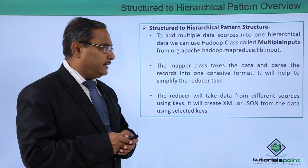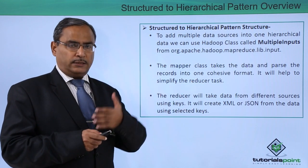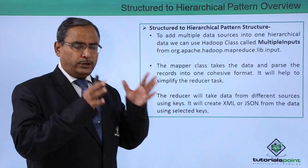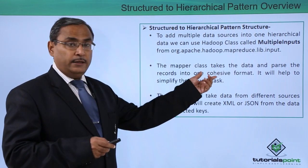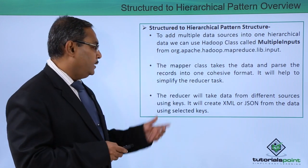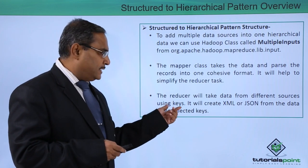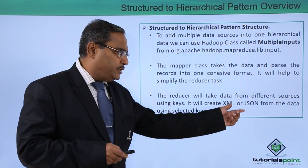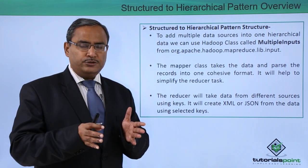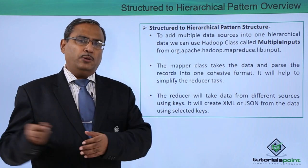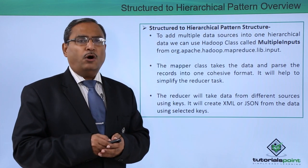The mapper class takes the data and parses the records into one cohesive format. The mapper will take the structured data, parse it, and convert it to a cohesive format that helps the reducer do the needful next. The reducer will take data from different sources and using the keys it will create XML or JSON, converting the mapper output into the respective hierarchical format — either JSON or XML.